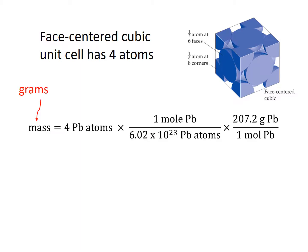Well, we would use dimensional analysis again. We remember that four lead atoms is in a face-centered cubic unit cell, and we would use Avogadro's conversion number, which is 6.02 times 10 to the 23rd lead atoms is one mole of lead, and then go to the periodic table and use the molar mass for lead to calculate the mass in grams.